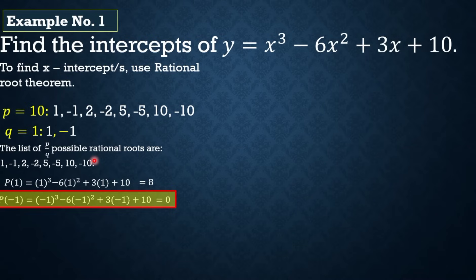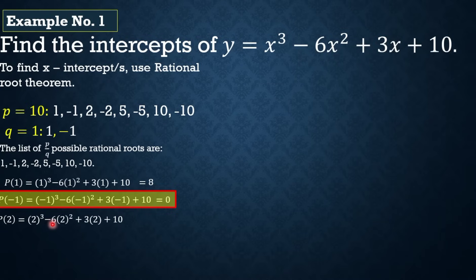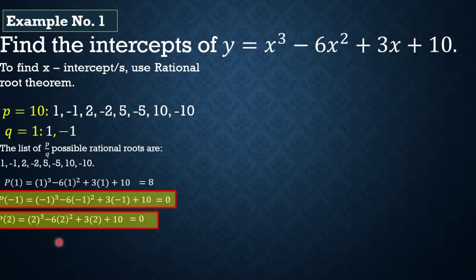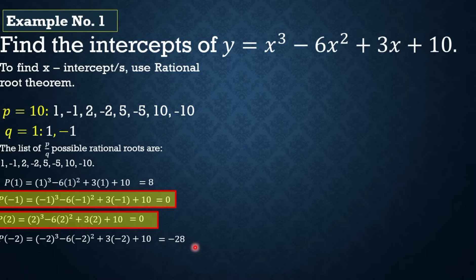Since yung degree natin is 3, at most 3 ang makukuha nating x-intercept — pwedeng tatlo, dalawa, o isa. Meron na tayong negative 1, so makuha pa tayo ng dalawa. Proceed tayo kay positive 2: 2³ - 6(2²) + 3(2) + 10 = 0. So si positive 2 ay kasama sa x-intercept. Kay negative 2 naman, equals to negative 28 — so si negative 2 ay hindi kasama.